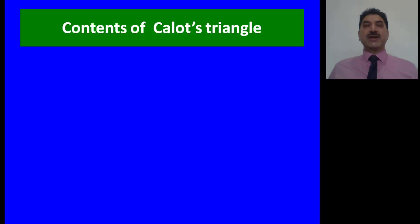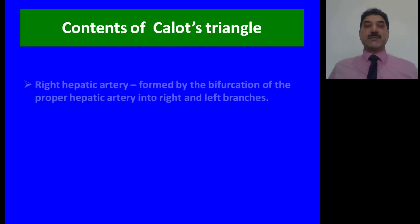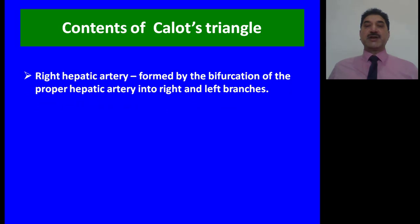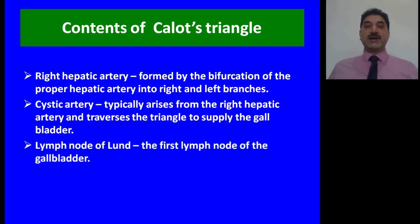The contents of Calot's triangle are: the right hepatic artery, formed by bifurcation of the proper hepatic artery into right and left branches; the cystic artery, which typically arises from the right hepatic artery and traverses the triangle to supply the gallbladder; the lymph node of Lund, which is also contained in the modern Calot's triangle; and small lymphatic vessels which cannot be seen with the naked eye.